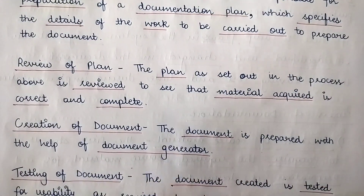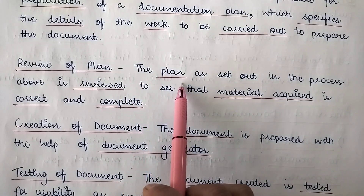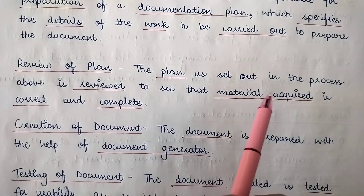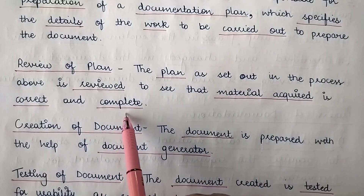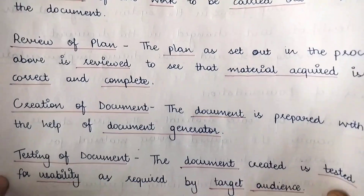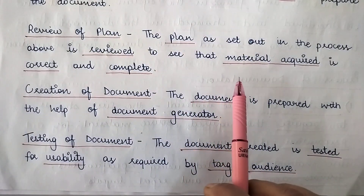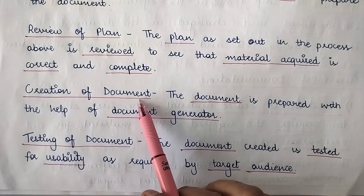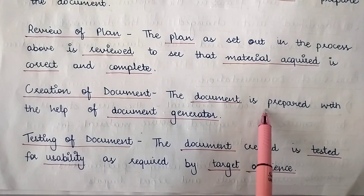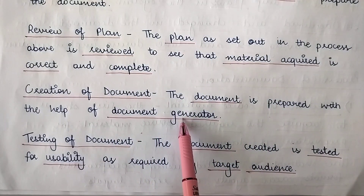The third step is the review of the plan. Once the documentation plan is ready, it is reviewed to see if the material acquired is correct and complete. The fourth step is the creation of the document — once all three previous steps have been completed successfully, the document is actually created or prepared with the help of a document generator.